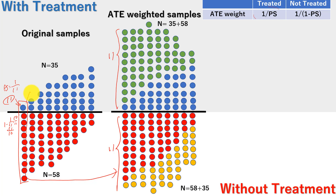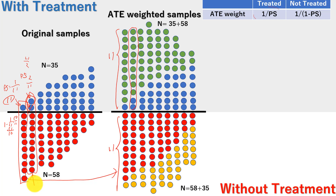For the next column with PS = 2/11: each of the 2 treated dots gets weight 11/2, so 2 dots become 11. Each of the 9 untreated dots gets weight 9/11 — wait, that means 9 dots also become 11. The treated and untreated counts are now equal across columns.